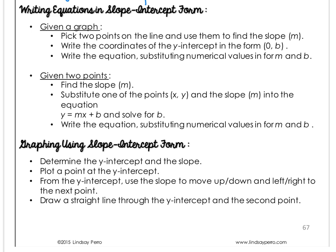If you're given two points, find the slope using the slope formula. Then substitute one of the points and the slope into the equation Y equals MX plus B to solve for B. Write the final equation substituting the numerical values in for M and B.